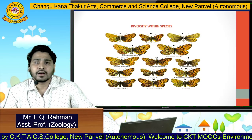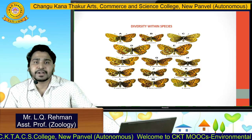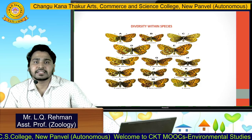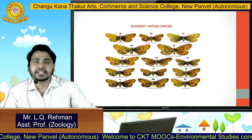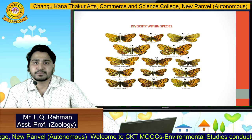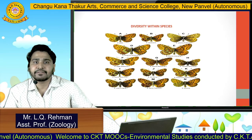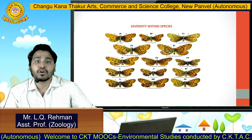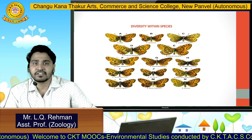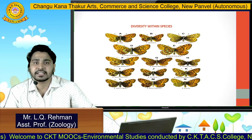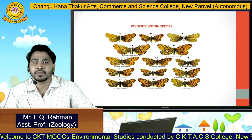In this particular diagram, you can clearly see the diversity within a species — the butterfly. There are so many different and diverse varieties of butterfly that you can easily see in this diagram.